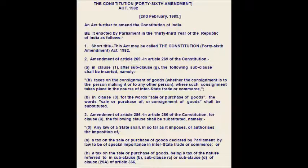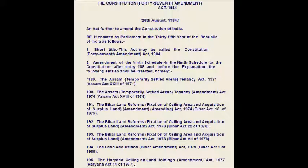The 46th Amendment in 1982 sought to bring about some uniformity in tax rates on certain items and gave sufficient powers to states to plug loopholes in laws relating to sales tax dues. The 47th Amendment in 1984 included 14 land reform acts from different states in the 9th Schedule to ensure their immunity from litigation. After this amendment, the number of acts included in the 9th Schedule rose to 202.